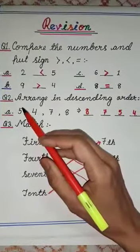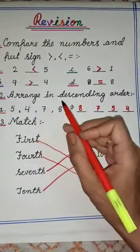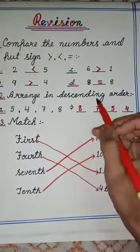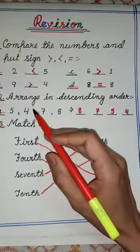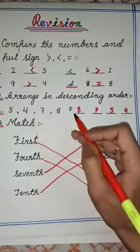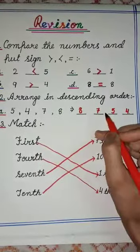Now see next question which is arrange in descending order. Children, in descending order we arrange numbers starting from the biggest number and moving on to the smallest number.